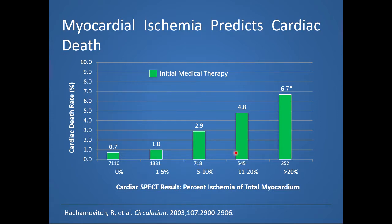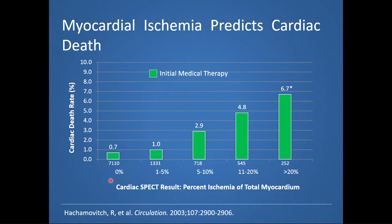Let's set the context for why it's so important to treat myocardial ischemia. In coronary artery disease, the presence and extent of inducible ischemia is the most important factor predicting outcomes. This graph comes from a widely referenced prospective cohort study of 10,627 patients who underwent cardiac SPECT. On the y-axis we have cardiac death rate as a percentage; on the x-axis, cardiac SPECT result expressed as percent ischemia of total myocardium — ranging from 0% to greater than 20%. The green represents patients that received initial medical therapy, and the cardiac death rate clearly increases with more and more myocardial ischemia.